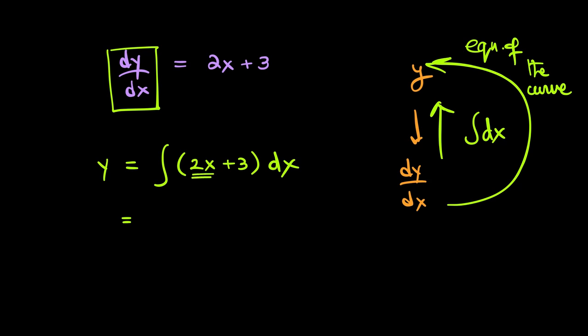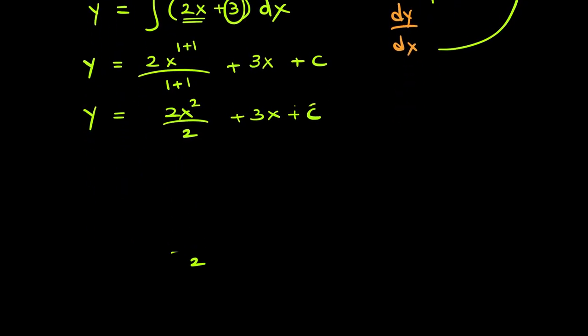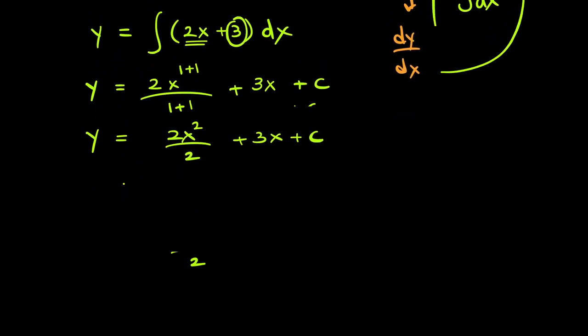Therefore, integrate 2x, that is 2 as it is, the power of x is increased by 1, divide by the new power. The 3 becomes 3x plus a constant of integration c. Therefore, it simplifies to 2x square over 2 plus 3x plus c, which can be further simplified and written as x square plus 3x plus c.